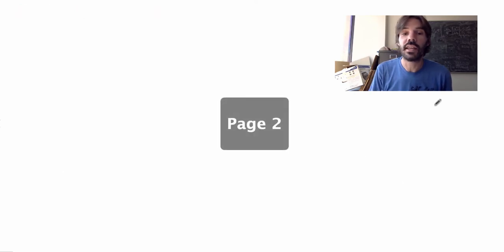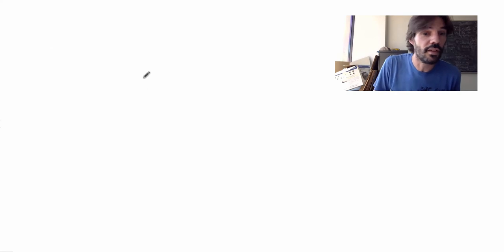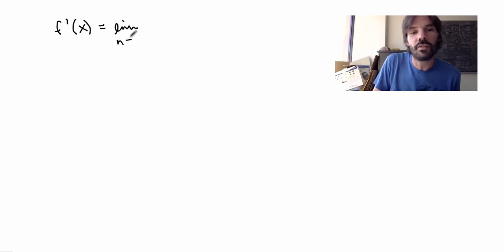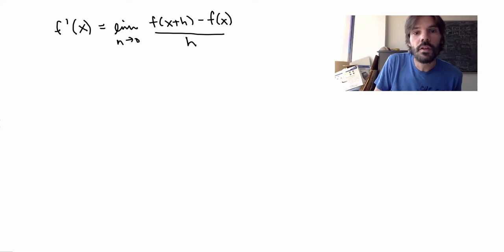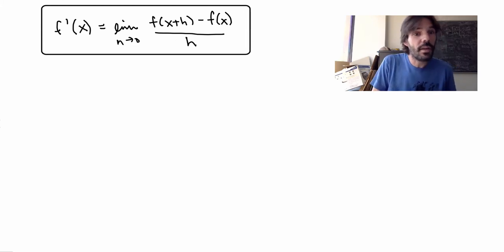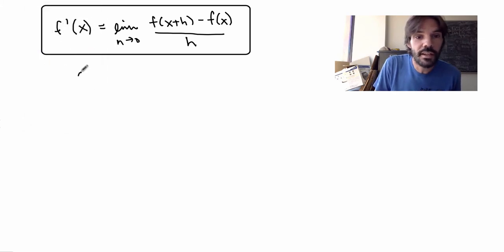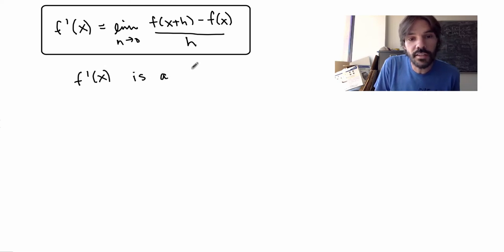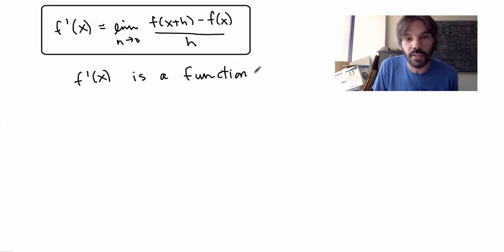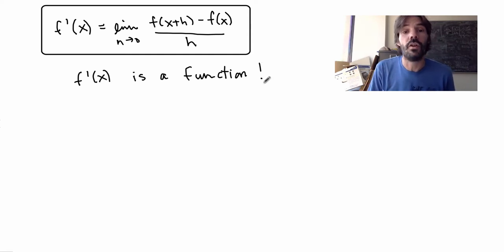Using this, I can generalize the definition of the derivative. I write a new definition: f prime of x is equal to the limit as h goes to 0 of f(x+h) minus f(x) divided by h. All I've done is replace a by x, but fundamentally this is quite different because now I can understand f prime of x as a function itself. It is well defined for any x in the domain of my function, so I've gone from a function f(x) to a new function f prime of x, the derivative of f(x).